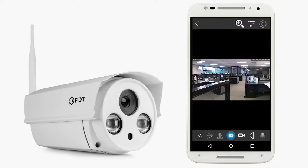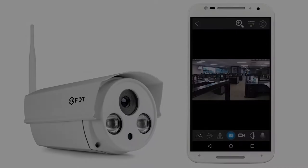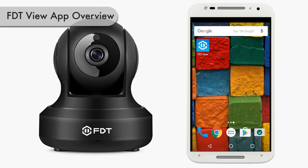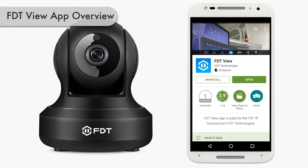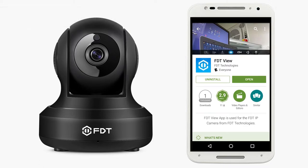For example, if you have an FD7902 WiFi bullet camera, pan and tilt features will not be available. Let's begin. If you have not already, please download the FDT View app from the Apple App Store or Google Play Store. Launch the app.